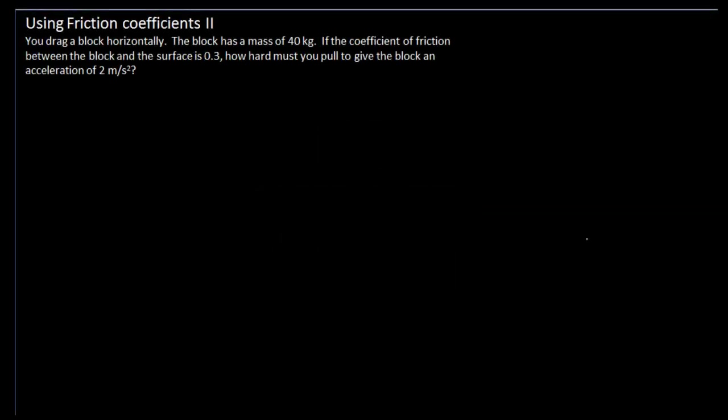This is our second problem that deals with coefficient of friction. In this case, it says you drag a block horizontally. The block has a mass of 40 kilograms. If the coefficient of friction between the block and the surface is 0.3, how hard must you pull to give the block an acceleration of 2 meters per second squared?